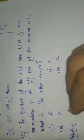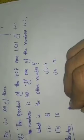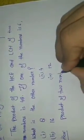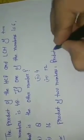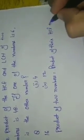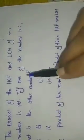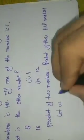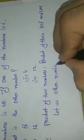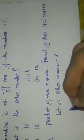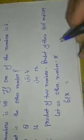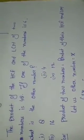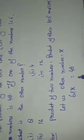So, students, this is your question. First, you will write the formula: product of two numbers is equal to product of their HCF and LCM. Only one number has been given — 6 — and it has been asked about the other number. So you will let the other number equal X. The formula gives: first number × other number = HCF × LCM. It means 6 × X = 48.